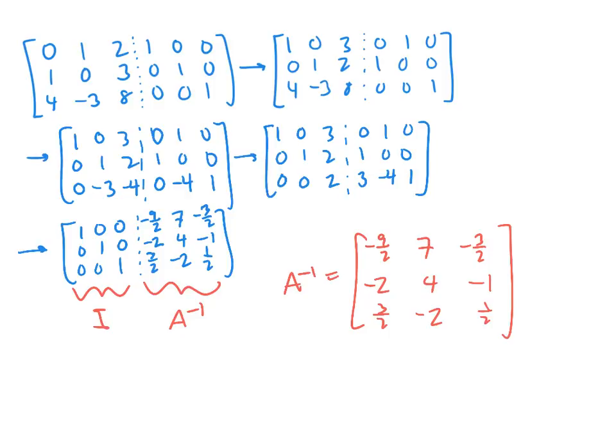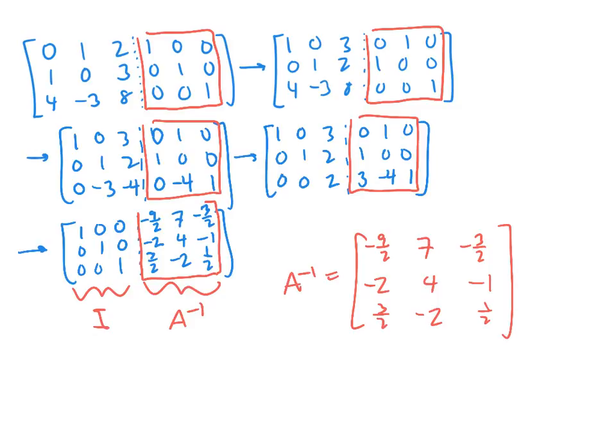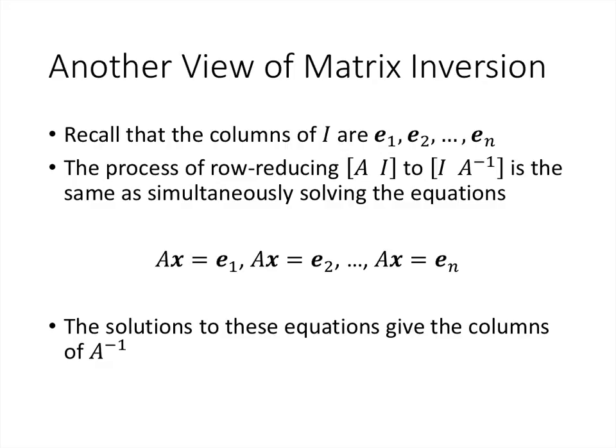We can verify this by multiplying A inverse by the original matrix A in both orders to confirm we get the identity. But by the proof of the theorem, this is exactly what we'd get by applying all those row operations to the identity matrix — because that's precisely what we did at every step to the right half. This process works for 4×4, 5×5, and 6×6 matrices too; the bigger the matrix, the more steps, but the general process works.